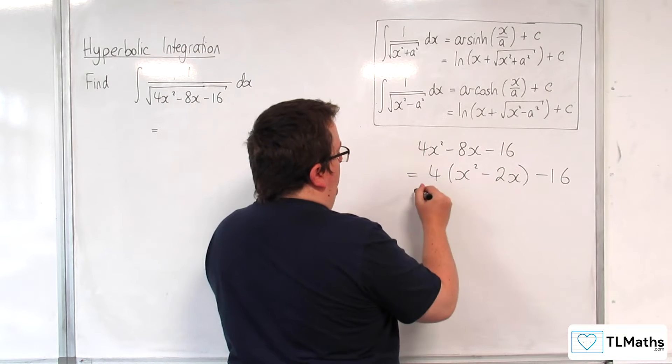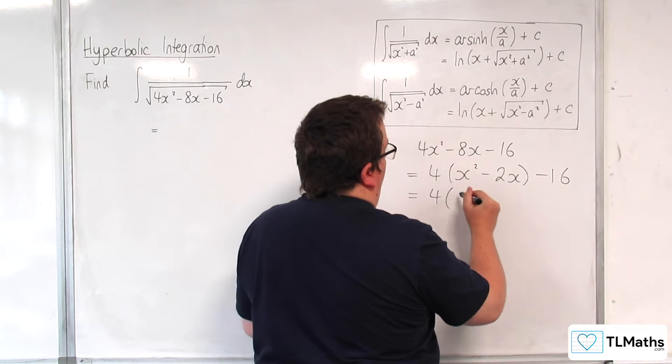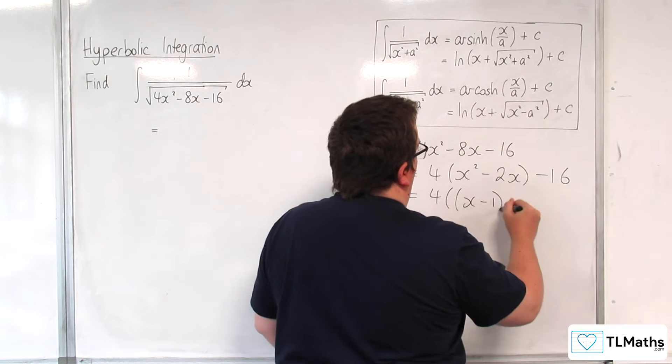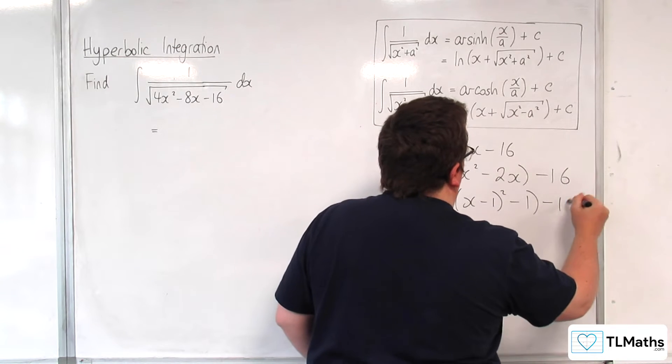Then you complete the square on the inside bracket. So, 4 lots of, we're going to have x take away 1 squared, take away 1, take away 16.